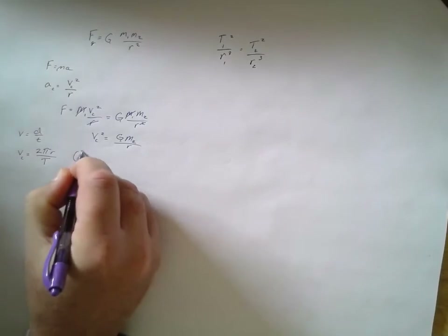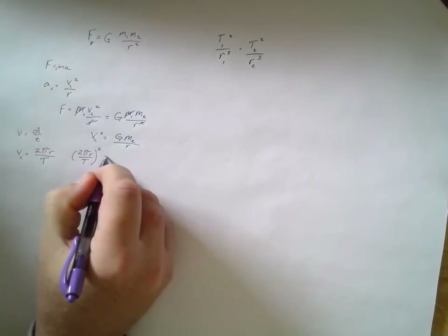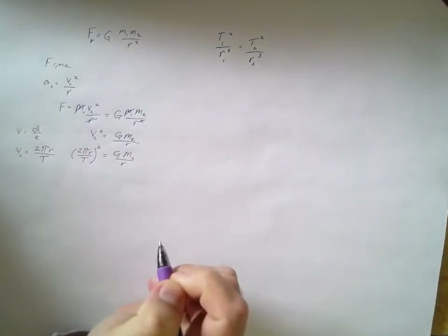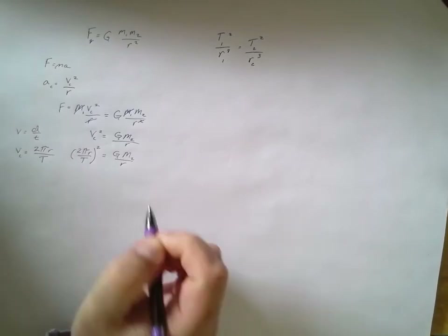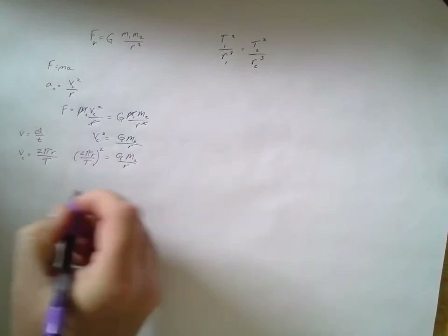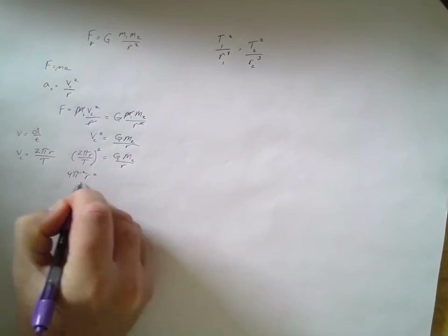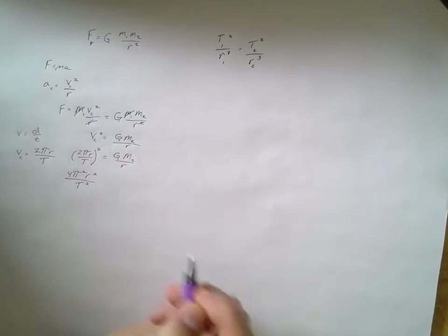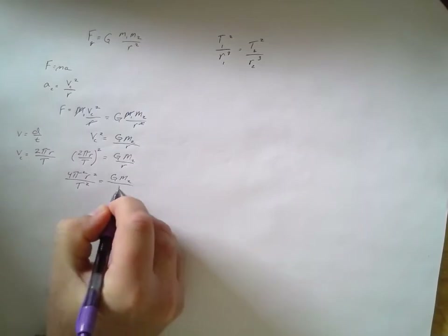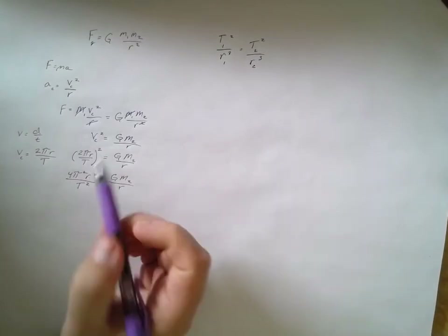Substituting v_c = 2πr/T into v_c² = Gm/r, we get (2πr/T) squared equals Gm over r. Squaring the left side gives 4π² r² divided by T² equals Gm over r. We can drop the subscript and call the central mass simply m.